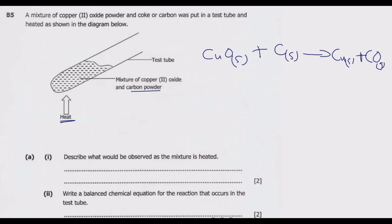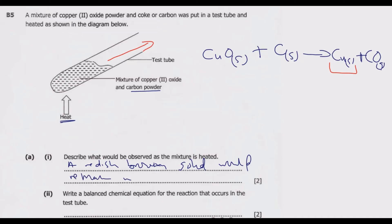The copper solid product will remain in the test tube while the carbon monoxide gas escapes. What is observed is a reddish-brown solid remaining in the test tube — that is the copper solid.